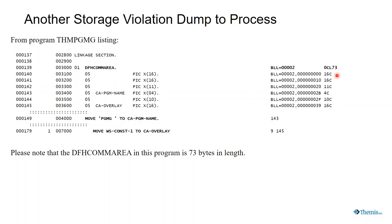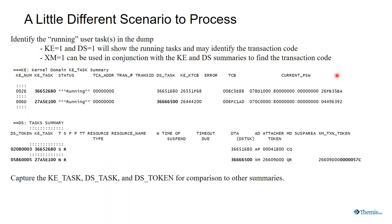This is the loader domain token for the program I came from, and I find out it's in program A. So I got my program A source list. I find the link to G passing the comm area — when I look at the comm area it's hex 64 bytes, or 64 characters. When I go to program G and look at the comm area, it's defined as 73. Here's a case of comm area overlay — one program has linked to another with a comm area, but program G's definition for the comm area is bigger than what's actually being passed. As a consequence, I will get the dump.